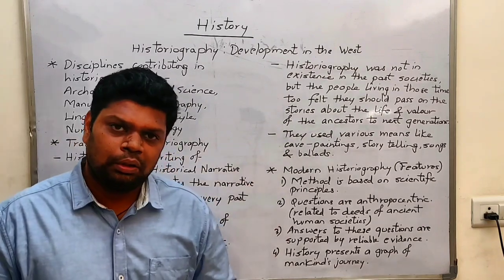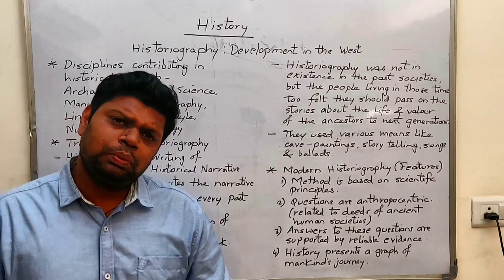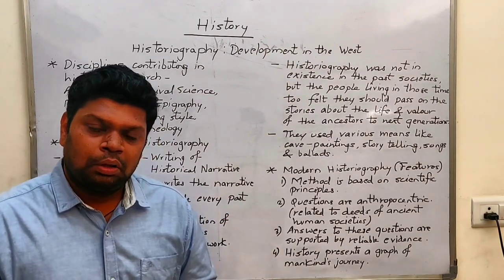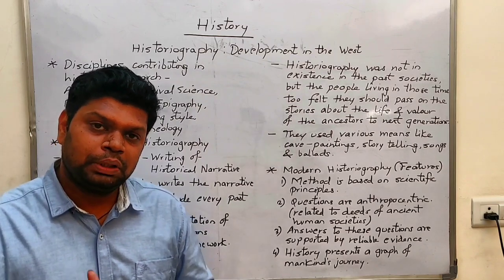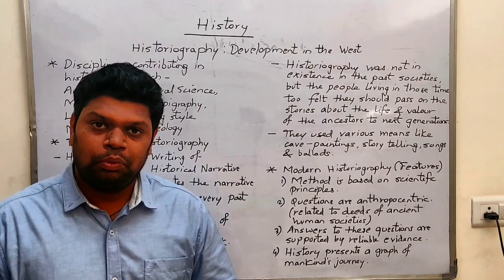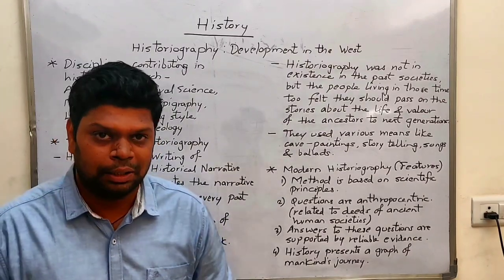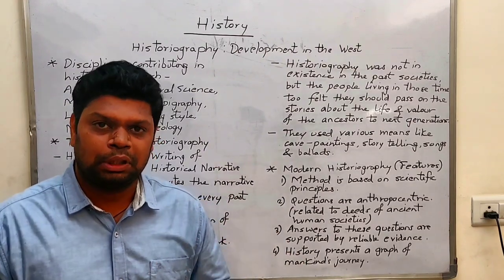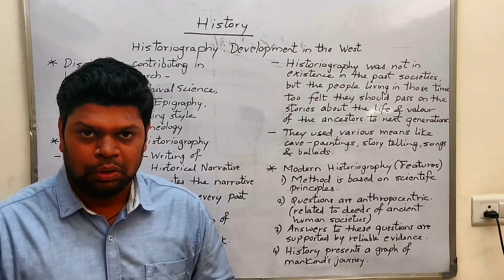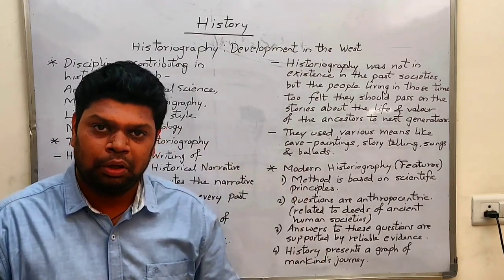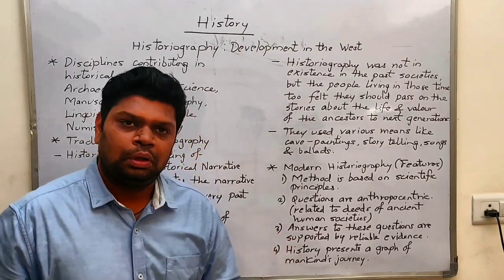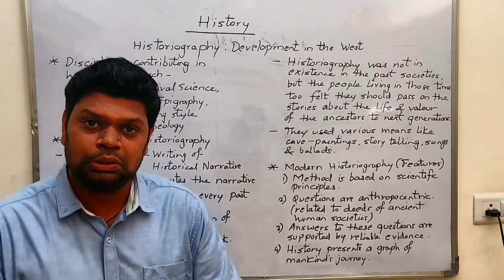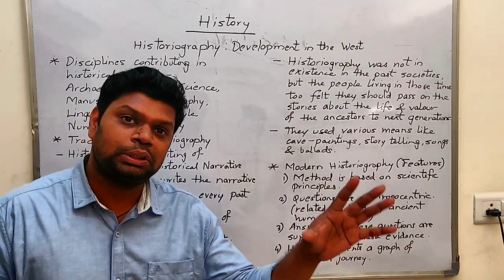If we try to understand today's historiography, there are four characteristics. First, the most important role is scientific principles — we use scientific principles for historical research. Second, the questions we research are anthropocentric, meaning they concern deeds done by humans, related to what we have done in the past. Third, the answers to these questions are based on reliable, evidence-based sources.